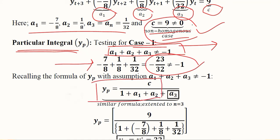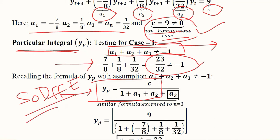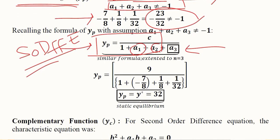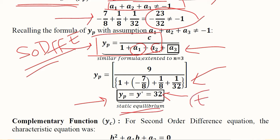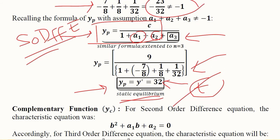We can adopt the particular integral formula from the second-order difference equation — from sub-case 1 — but with a3 added in the denominator beside the other two coefficients, because we have a third coefficient due to the third-order difference equation. Substituting these values, we get the particular integral equal to 32, which is the static equilibrium since no t is involved.